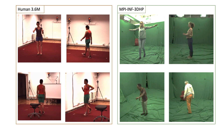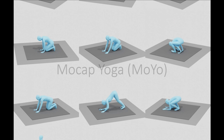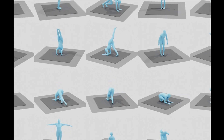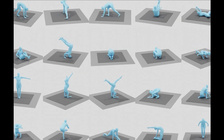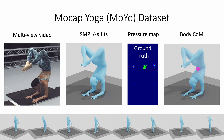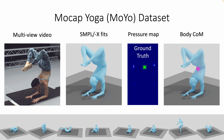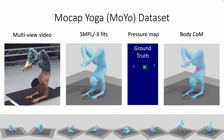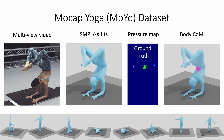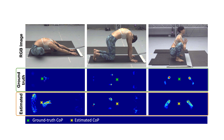We observe that current benchmarks largely contain simple poses and limited body-ground contact. To evaluate our contribution on more challenging poses, we capture a yoga professional in a mo-cap studio performing 200 highly complex poses, using a pressure-sensing mat. We call this benchmark MOYO. The dataset uniquely contains synchronized multi-view video, ground truth SMPL-X meshes, pressure sensor measurements, and body center of mass obtained from Vicon plug-in gait. We use the ground truth pressure and center of mass in MOYO to evaluate our estimated pressure, center of pressure, and center of mass, and show that our estimates agree with the ground truth.